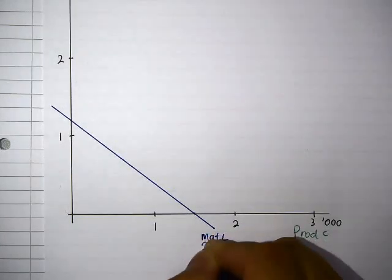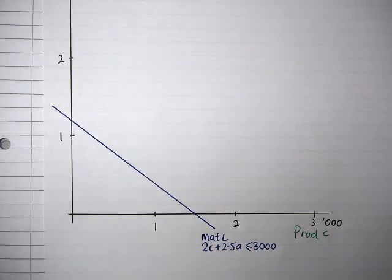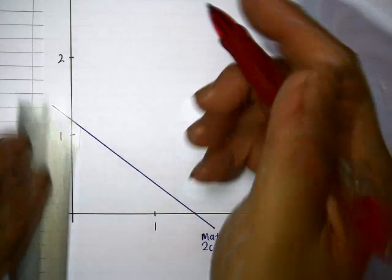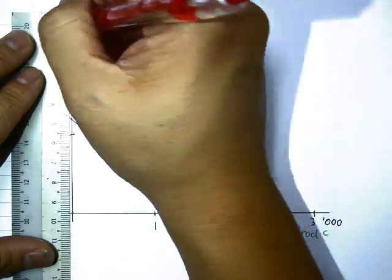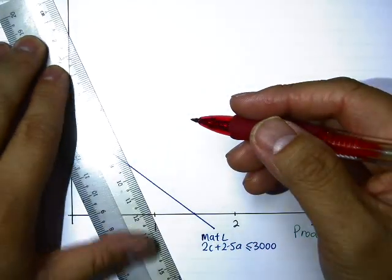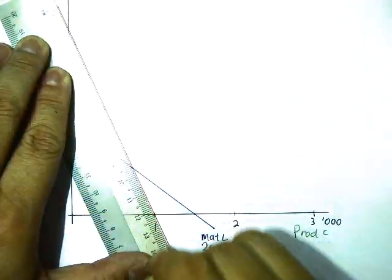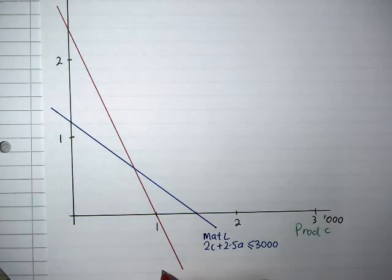Then we have 2400, 2400 will be 1.6 centimeters, then 1000. That's 2.4 is 1000. That's my line. This is my Skilled Labor, 1.2C plus 0.5A does not exceed 1200.